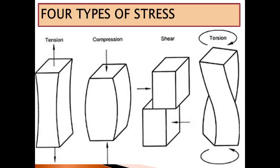Then we have torsion stress, which is like twisting. You may have come across some twisted materials — for example, certain metal rods which are twisted. You need to know these types of stress. You should be able to illustrate them, draw them, and also describe or explain them.